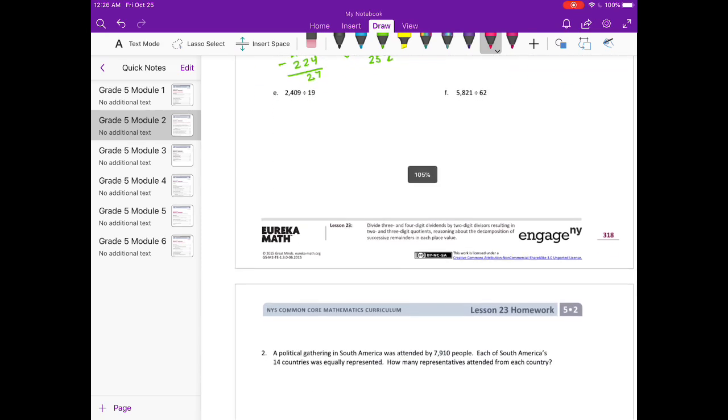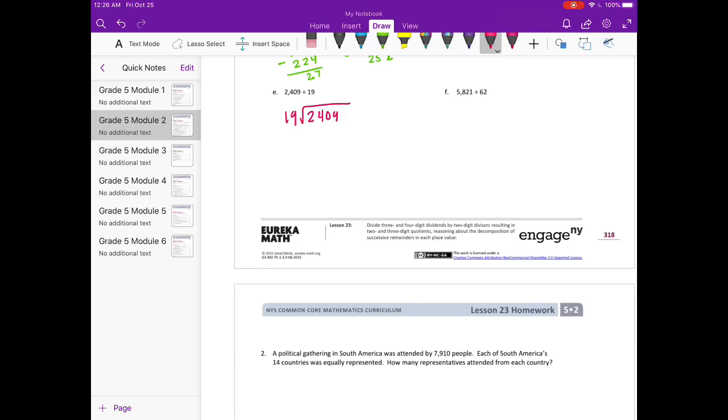2409 divided by 19. So 19 can't go into 2. It could go into 24 one time. If we subtract, we get 5 and bring down the 0. 19 can go into 50, let's see, twice. 2 times 19 is 38. Subtract again.